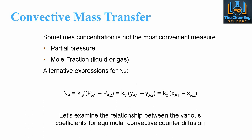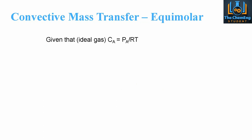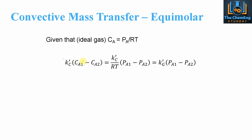Let's look at the relationships between these coefficients for equimolar convective counterdiffusion. For an ideal gas, concentration equals pressure divided by RT. Therefore, K'c multiplied by the change in concentration can be expressed in terms of partial pressure by dividing K'c by RT, giving K'c/RT multiplied by the change in pressure. We can express K'c/RT as K'g — the coefficient in terms of the gas — avoiding the need to write the full expression each time.